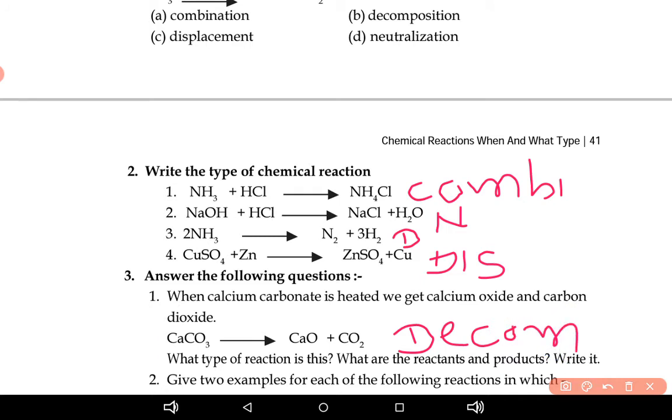What are the reactants? This is your reactant side, R for reactant. And this is product, P for product. In this way you write down answer of these questions in your science copy.